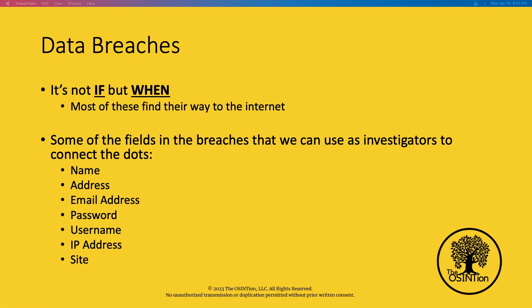Obviously we've got a password or a hash most of the time. We may have a name, a physical address, an email or an IP address, a username, and then of course what site. In some cases there are aggregates where we know it came from a specific site, and there are aggregates that have a multitude of sites, kind of like the rockyou.txt password file.